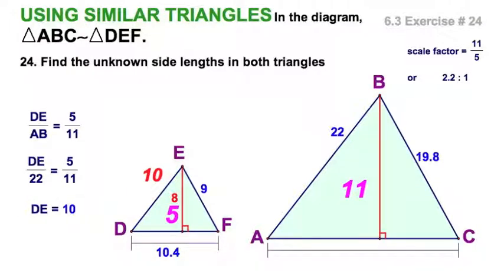And let's find the other one. That's this part down here. See, now I'm going to say, I like this recipe. AC is to DF, or 10.4, as 11 is to 5.